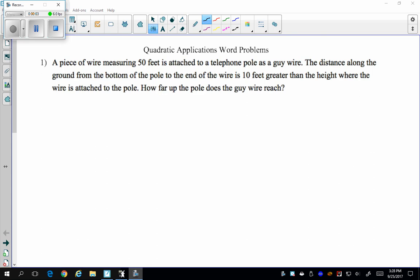Welcome to video 1i and 1j where we explore using quadratics to solve real world problems. This first problem talks about a piece of wire measuring 50 feet attached to a telephone pole. The distance on the bottom from the pole to the wire is 10 feet greater than the height.